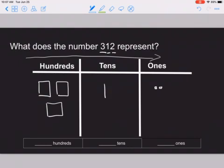But what does the number 312 represent? So let's look at how many hundreds does this represent first. Well, how many hundreds were in the hundreds place? We had three. How many tens were in the tens place? There was just one because there was a one right here. And then how many ones were in the ones place? There's the ones place and there were just two. So the number 312 represents three hundreds, one 10, and two ones.